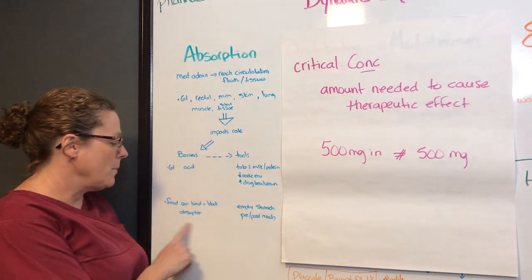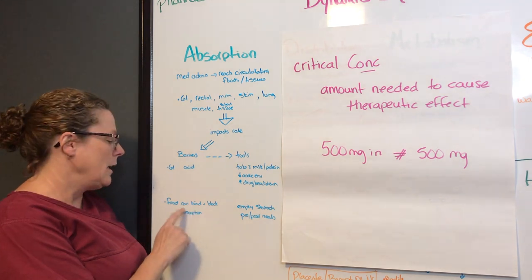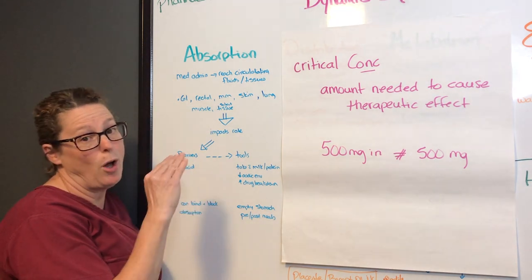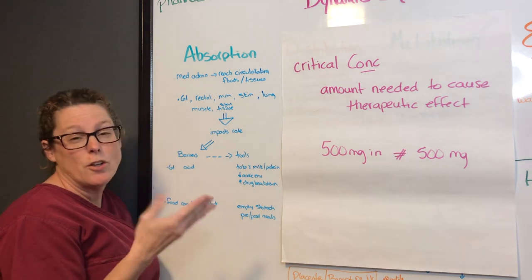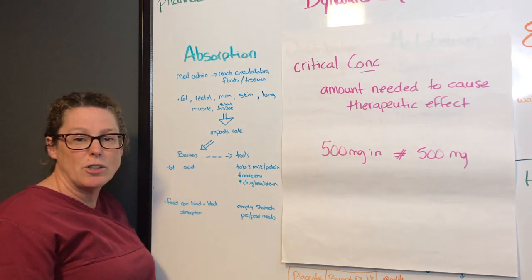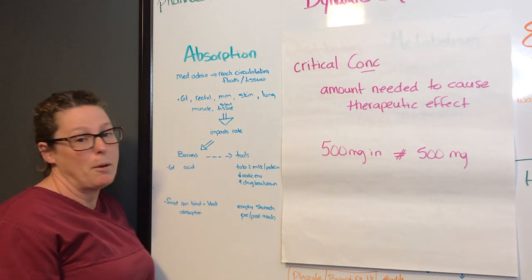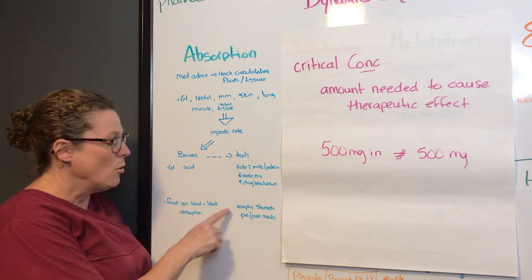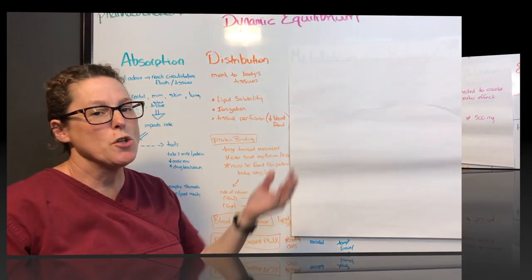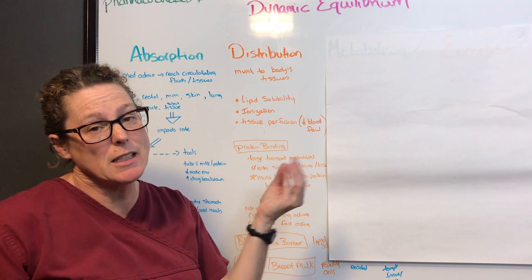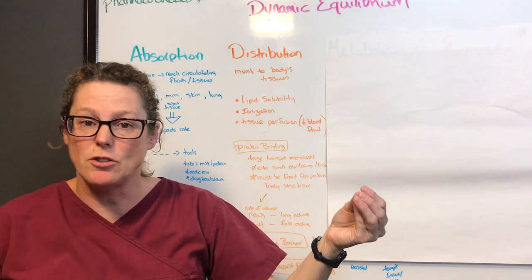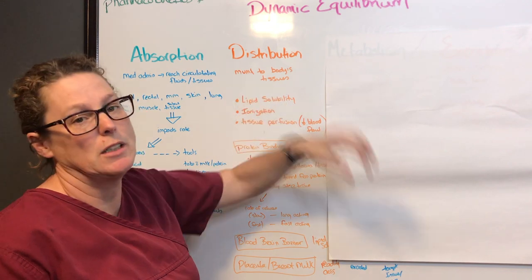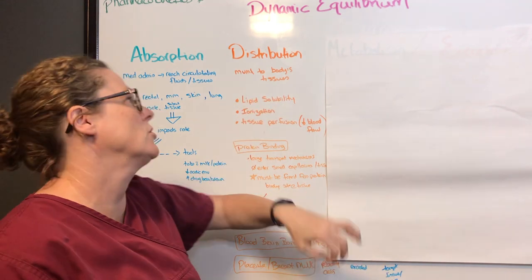Another barrier is that food can bind to a medication, blocking its absorption. That's where you'll see instructions such as take before or after meals, or on an empty stomach. So absorption deals with how that medication reaches the circulation and tissues, while distribution is how it moves into the body's tissues.